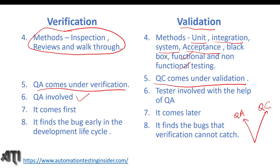In the V-model, the left side is quality assurance and the right side is quality control. In the next video I'll talk about what quality assurance and quality control mean. The QA analyst is involved in the verification part. There are different CMMI process areas; based on the company's level — level two, three, four, or five — certain process areas apply.